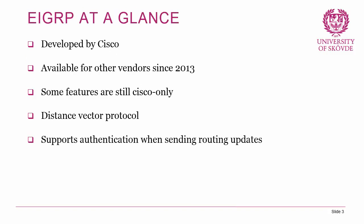Looking at EIGRP at a glance — it was developed by Cisco and is sort of proprietary; however, it's been available to other vendors since 2013, though some features remain Cisco-only. In a modern multi-vendor environment you can use EIGRP if your vendor has implemented it, but OSPF may be a better choice in that scenario. It's a distance vector protocol and supports authentication when sending routing updates.